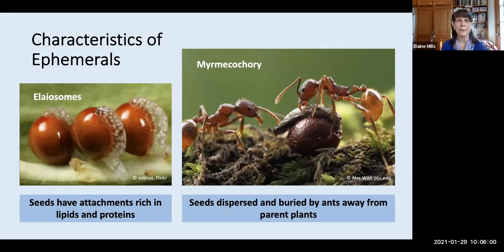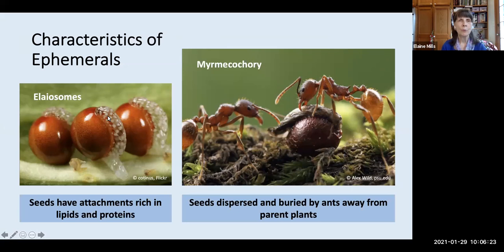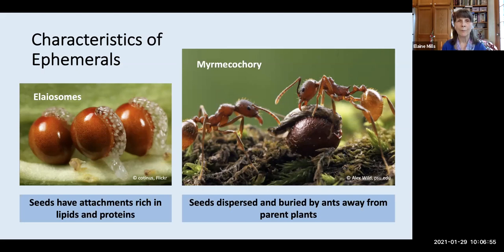Another characteristic of many spring ephemerals is their close relationship with ants. This whole process is referred to as myrmecochory, and the plants are referred to as myrmecochorous. Many of them have special attachments to their seeds that are rich in fats and proteins, referred to as elaiosomes. These structures are very attractive to ants, which gather up the seeds and carry them back to their nests. Here you can see them consuming the elaiosomes — they don't eat the seeds themselves, just the attachments. The seeds are left in the nests, where they later germinate and are distributed throughout the forest area, further from the adult plants.